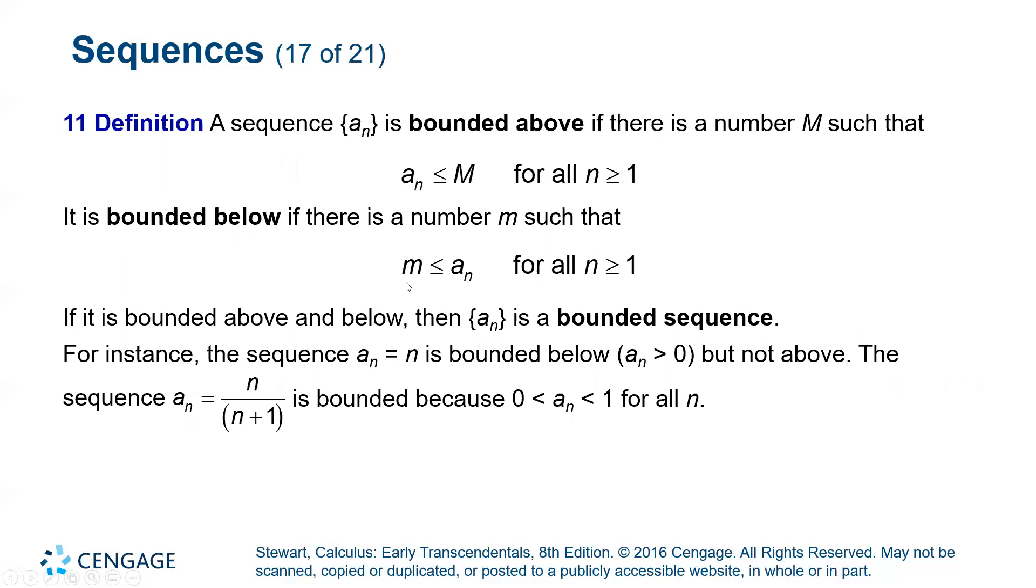If it's bounded both above and below, then we simply say it's bounded. If you can't say it's true for both of them, you have to specify. But if it is true for both, you can simply say bounded.